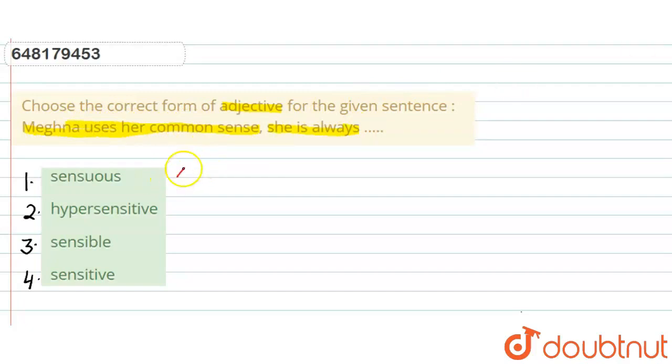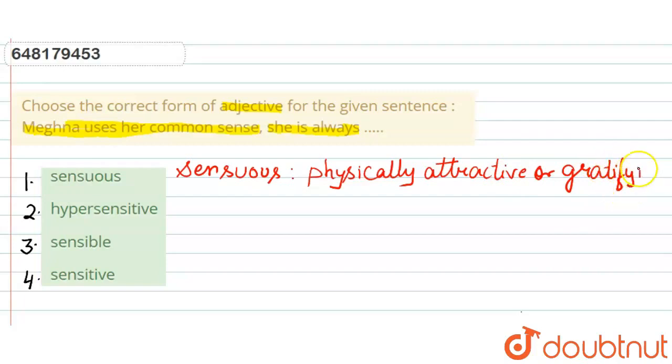The first option is sensuous. Sensuous meaning? Physically attractive or gratifying. You know, physically attractive, that person is sensuous.